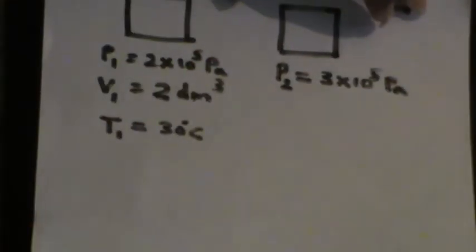For the second system, I'll take P2 to be 3 times 10 to the power 5 pascals, V2 to be 1.5 cubic decimeters, and what I'm asking is: what is the value of T2?